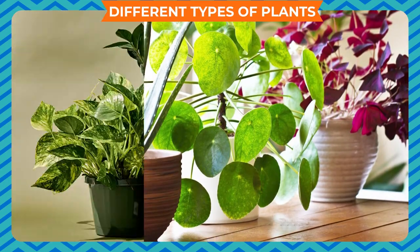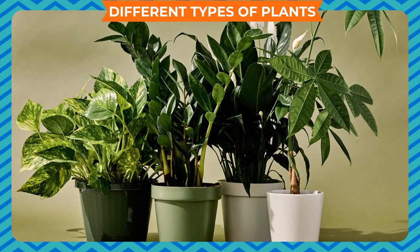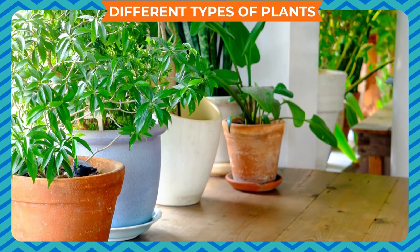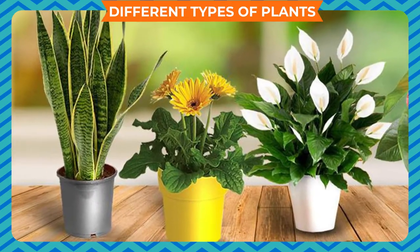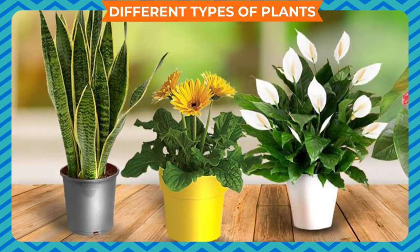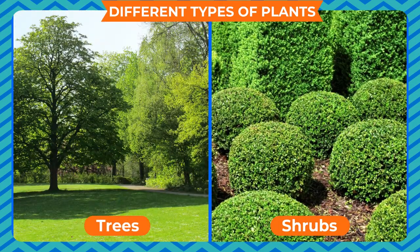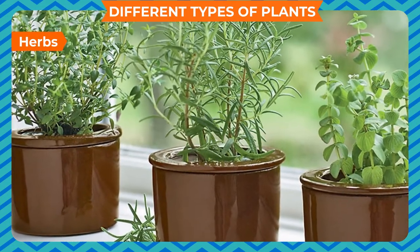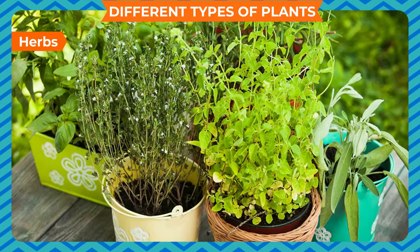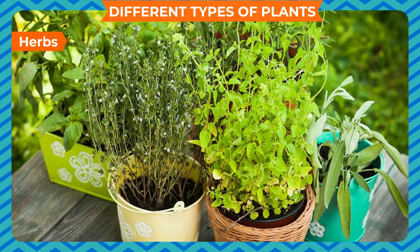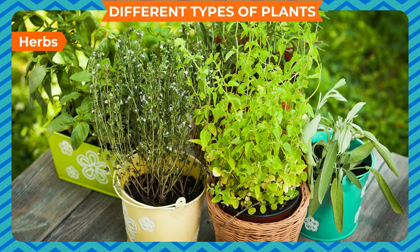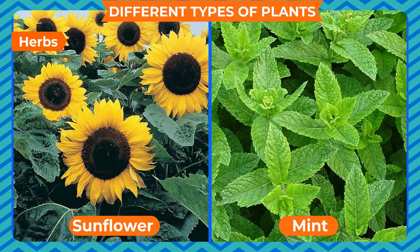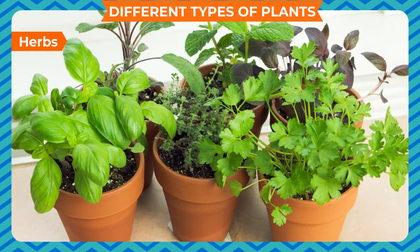The classification of plants can be done on the basis of their size and the nature of their stem. Three main categories of plants are herbs, shrubs, and trees. Herbs are small plants with a soft green stem. They are short-heightened, less than one meter tall. Mustard, basil, sunflower, and mint are examples of herbs.